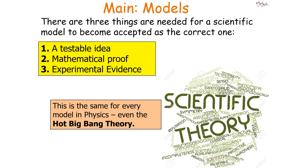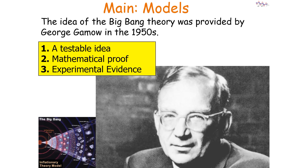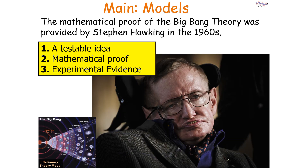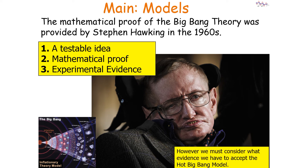There are three things needed for a scientific model to be accepted: a testable idea, a mathematical proof, and experimental evidence. This is the same for the hot Big Bang model. The idea of the Big Bang Theory was provided by George Gamow in the 1950s, and the mathematical proof was provided by Stephen Hawking in the 1960s. We must consider what evidence we have to accept the hot Big Bang model.